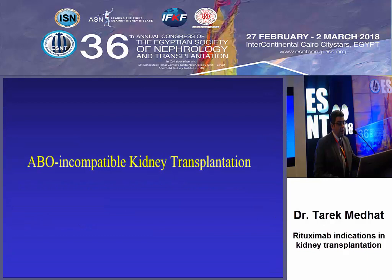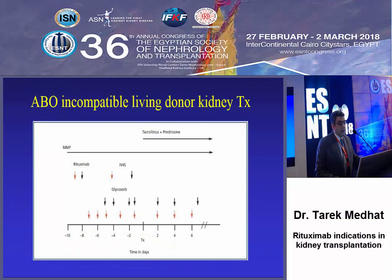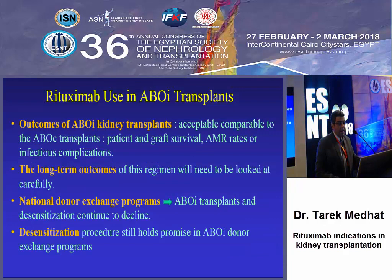In ABO-incompatible kidney transplantation, this figure shows the changes in the pre-conditioning protocols, and as we see, rituximab replaces the invasive splenectomy. This is an immunosuppressive regimen showing the use of IVIG and rituximab as induction therapy, followed by immunosuppression with steroids, tacrolimus, and MMF. The outcome of ABO-incompatible kidney transplantation is comparable to compatible cases regarding patient and graft survival, acute rejection, and infectious complications.